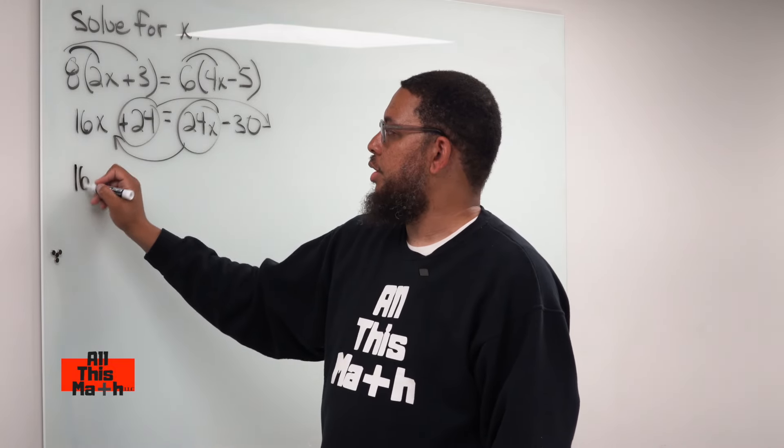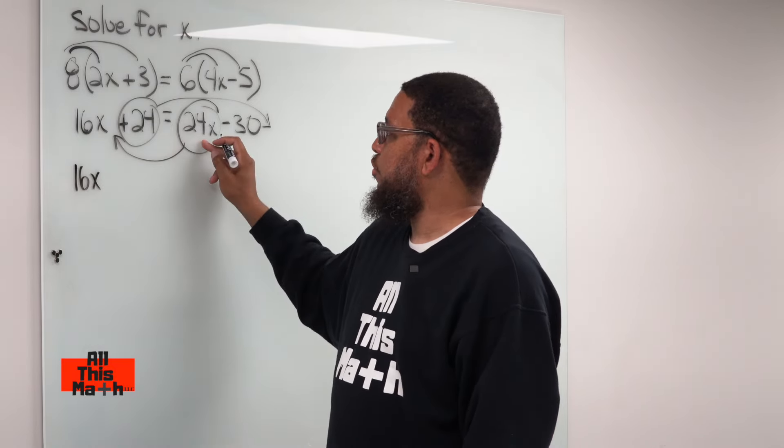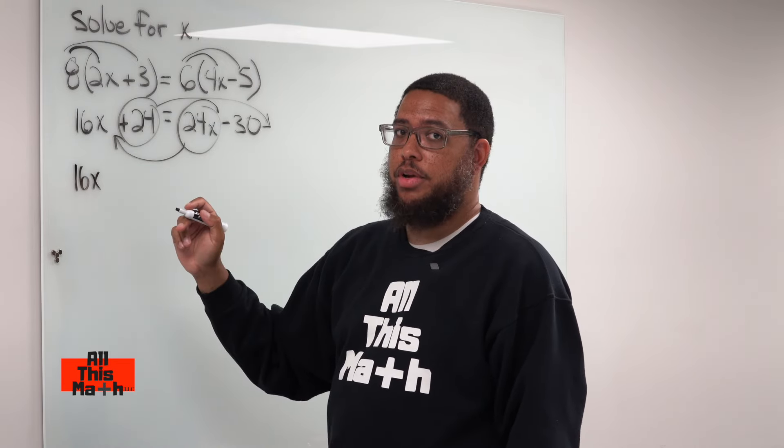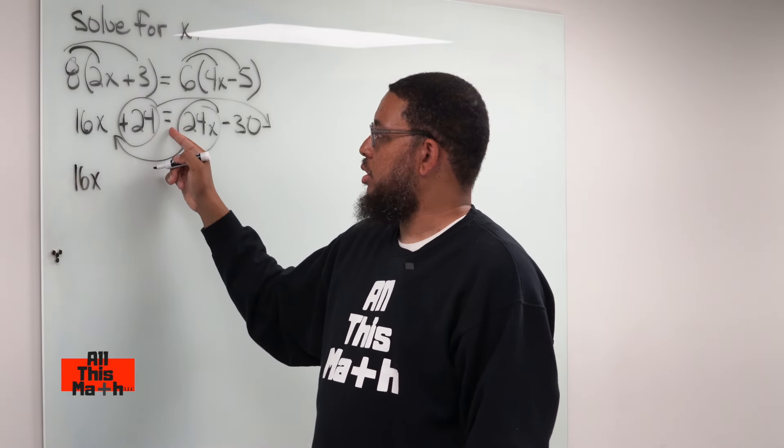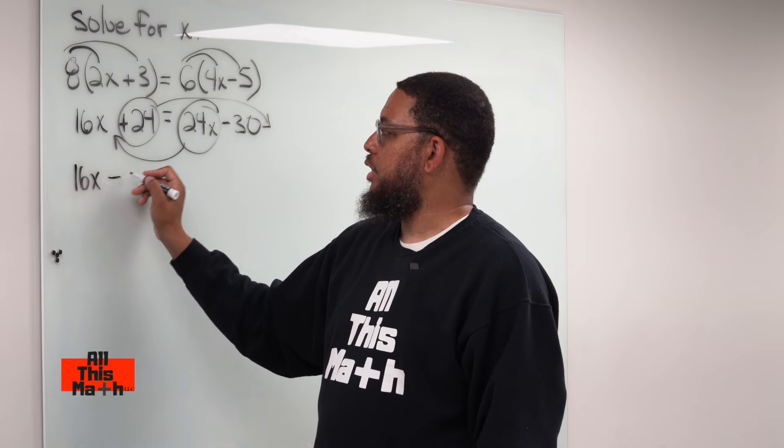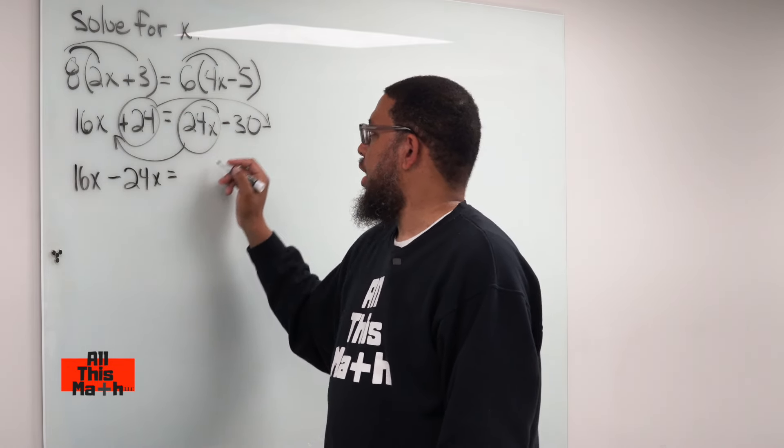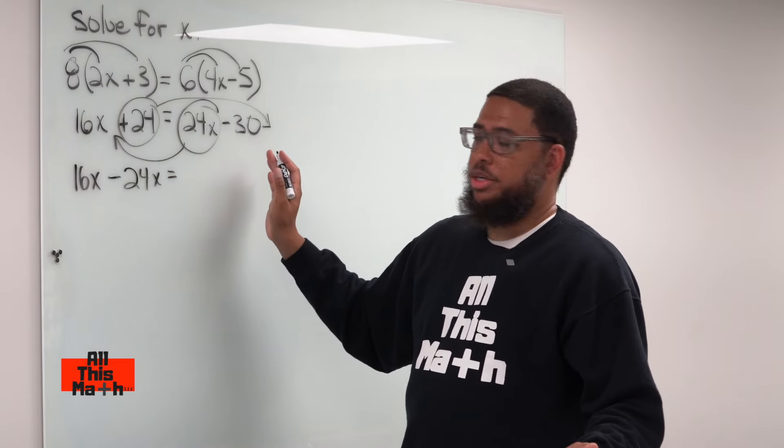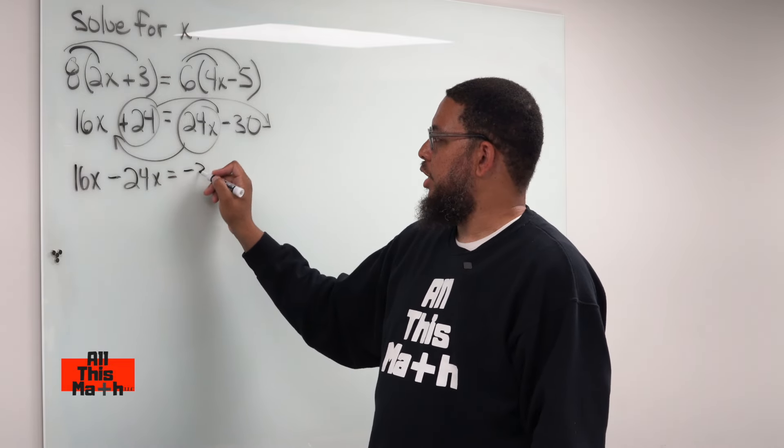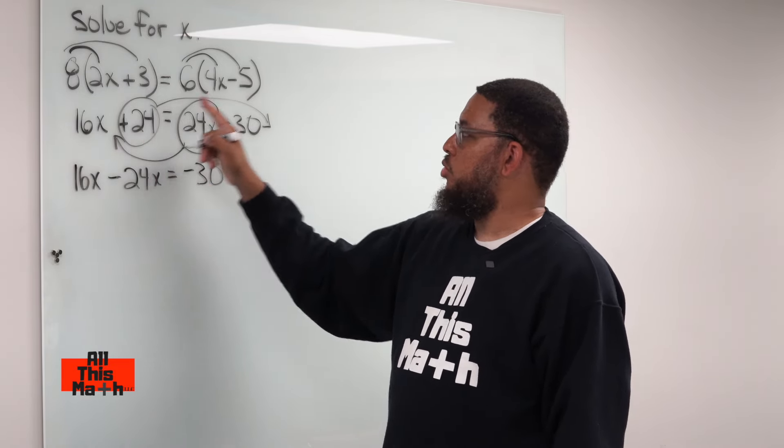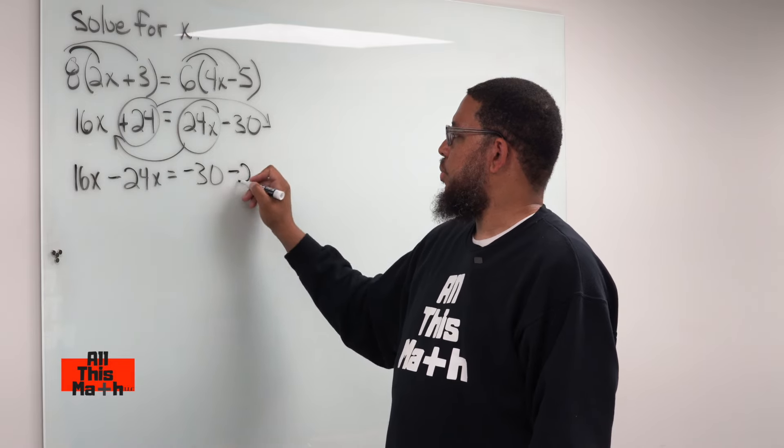So this 16x was already over here, so I keep it there. The 24x moves over, but now it's negative. When it moves, when it crosses the equal sign, the sign changes. So now it's a negative 24x. Bring the equal sign down. Now, we had a negative 30 that was already over there, so that's still negative 30. But this 24 moves over, and now it becomes negative 24.